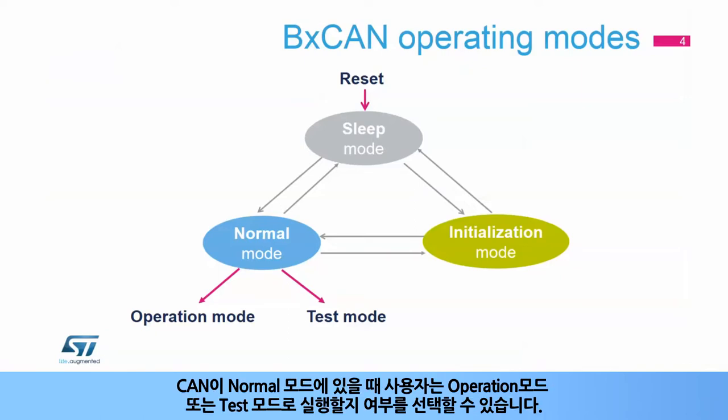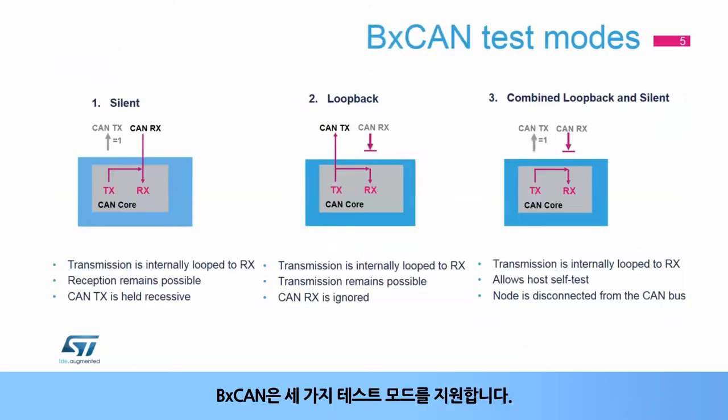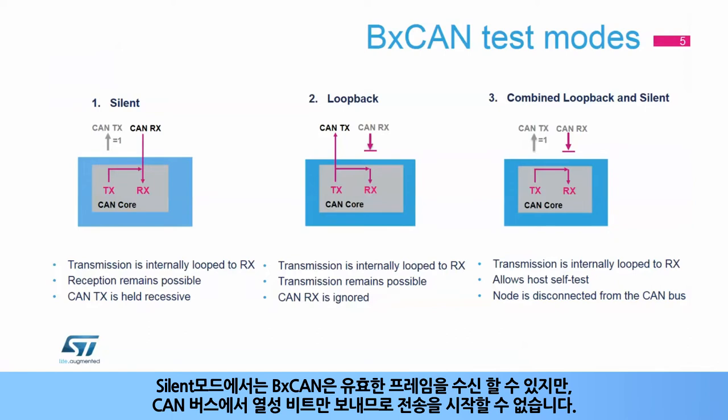When the CAN is in normal mode, the user can select whether to run in operation or test mode. The BX CAN supports three test modes. In silent mode, the BX CAN is able to receive valid frames, but it sends only recessive bits on the CAN bus, and it cannot start a transmission.